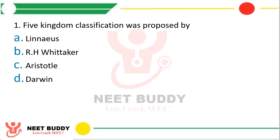Question number 1: Five kingdom classification was proposed by option A Linnaeus, option B R.H. Whittaker, option C Aristotle, or option D Darwin. The correct answer is option B, R.H. Whittaker.